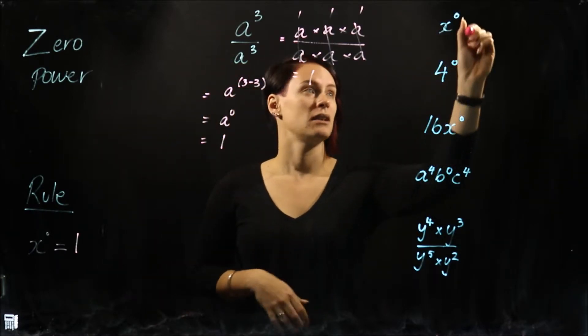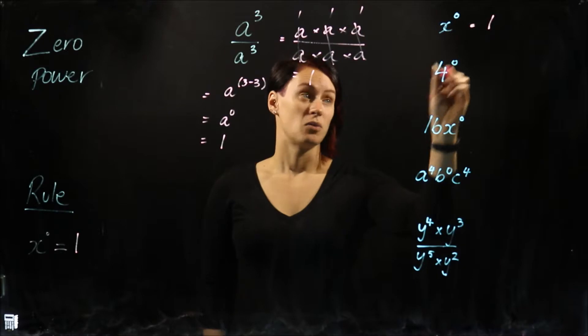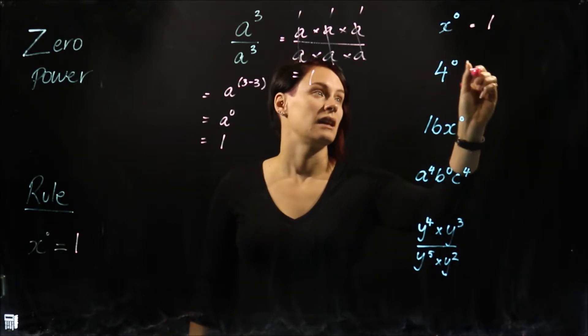So X to the power of zero here equals one. Four to the power of zero, same thing, equals one.